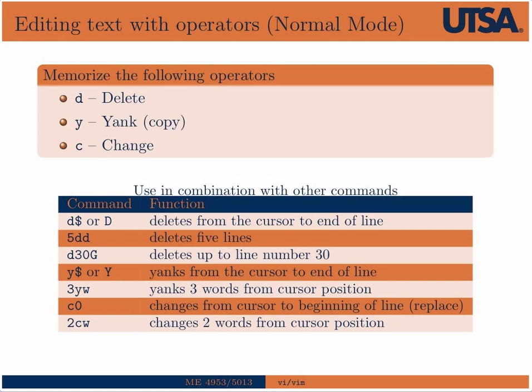D30G deletes up to line 30. Y dollar sign yanks or copies from the cursor to the end of the line — think of D as cut and Y as copy. 3YW yanks three words from the current position. C zero changes from wherever the cursor is to the beginning of the line — it deletes that range and enters insert mode. So 2CW changes two words from the current cursor position.